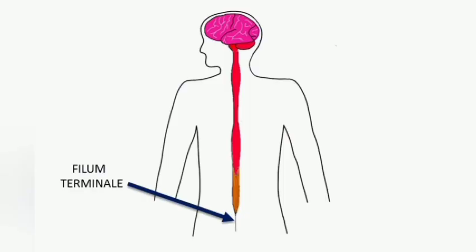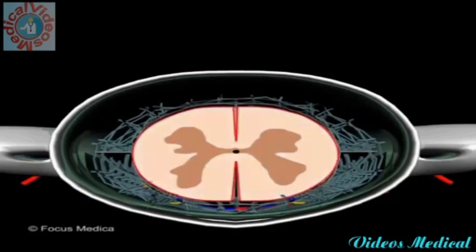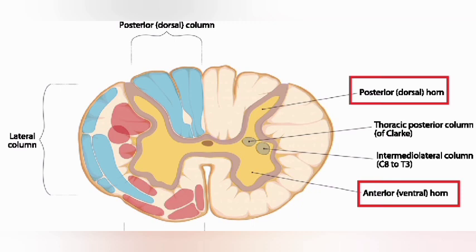The posteriormost region of the spinal cord tapers into a thin, fibrous, thread-like structure called the filum terminale. The cross section of the spinal cord shows that the grey matter of the spinal cord is H-shaped and is surrounded by the white matter. The upper end forms posterior horns or dorsal horns, and the lower end forms anterior horns or ventral horns.